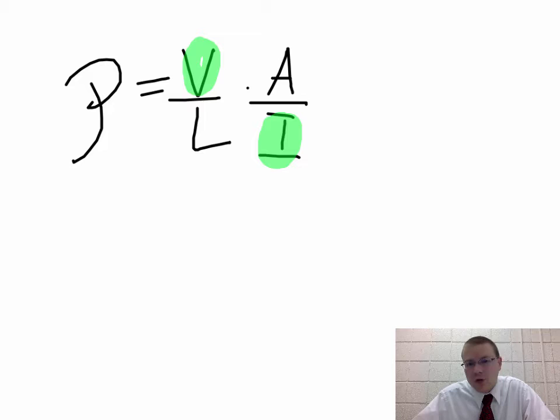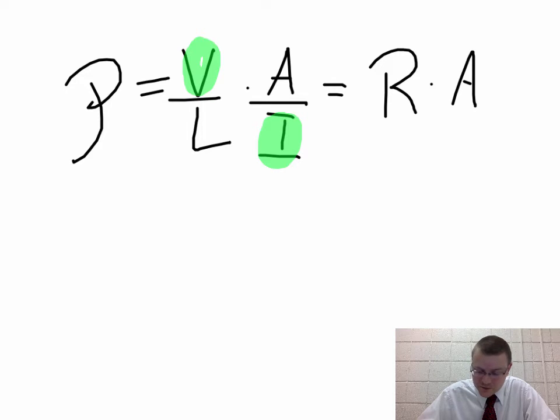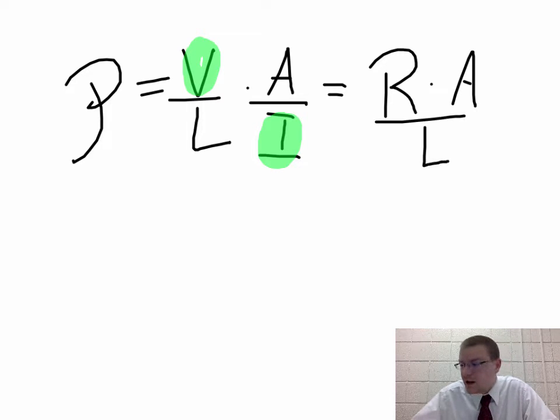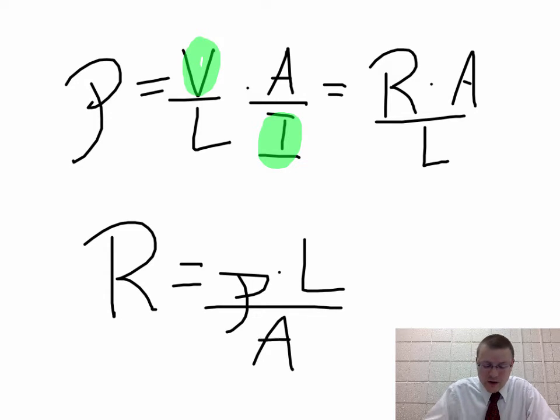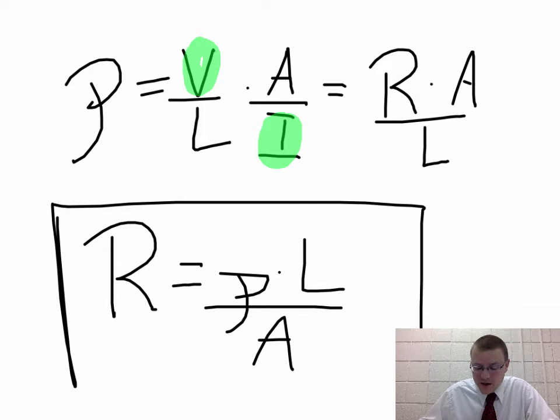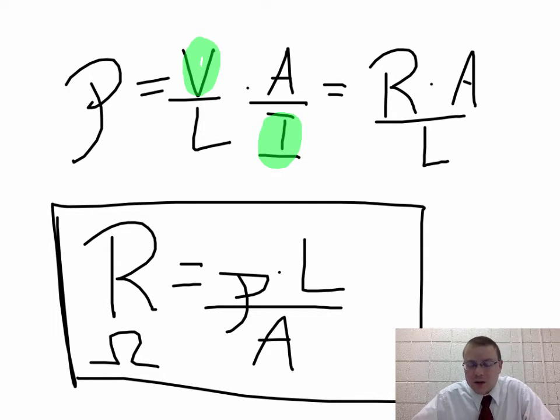We do have current down here in the bottom and volts up here on the top. Voltage over current, remember, was our resistance of the wire. So resistance times area over length. Those are all things that would equal resistivity. If I want to solve for the actual resistance of a wire, it would be ρ times length all over area. So this is how we find the ohms for any of our resistors, our wires, our filaments. We take this resistivity constant, we take the length of the wire, and we divide it by the area.